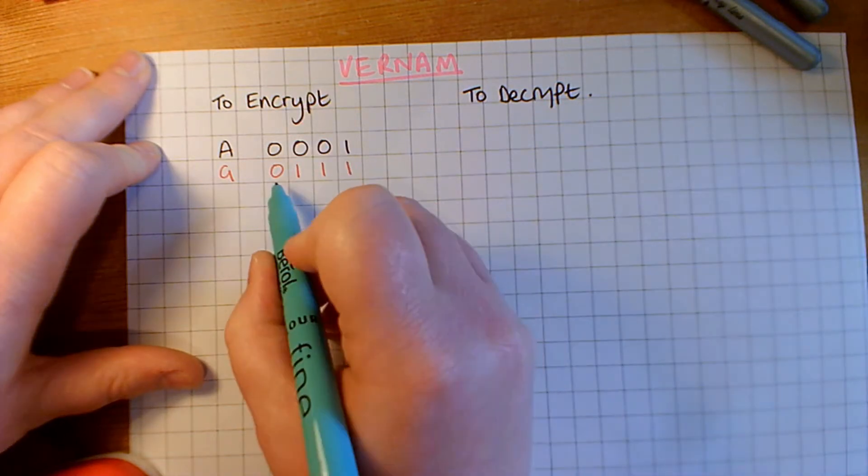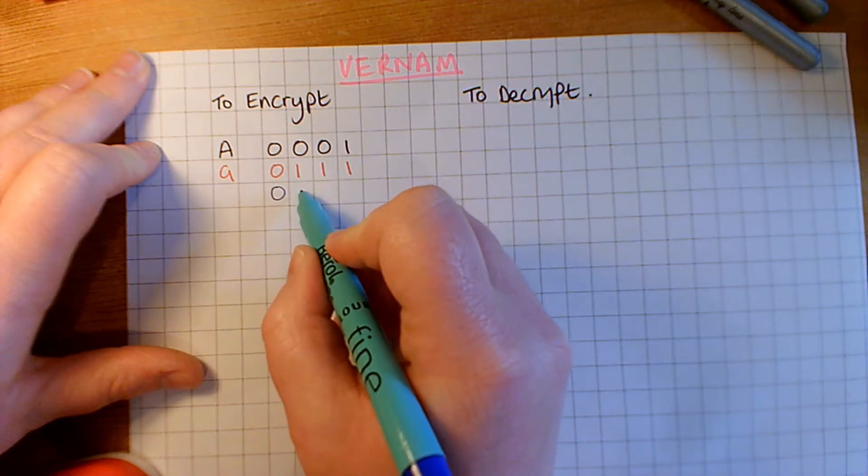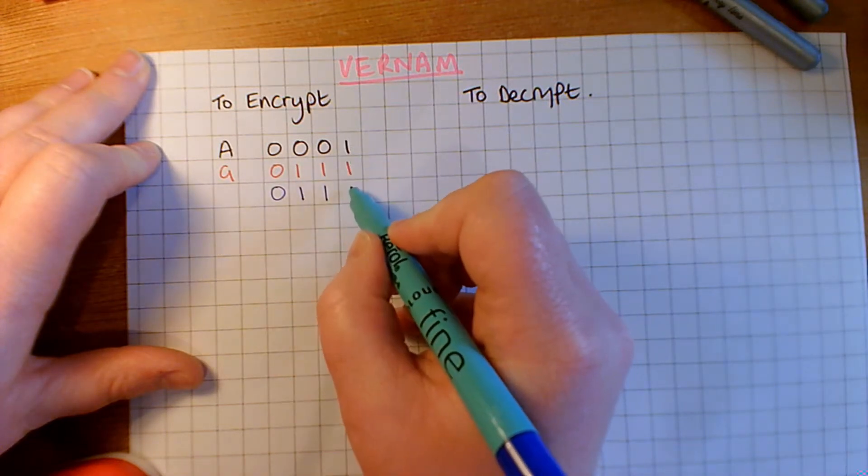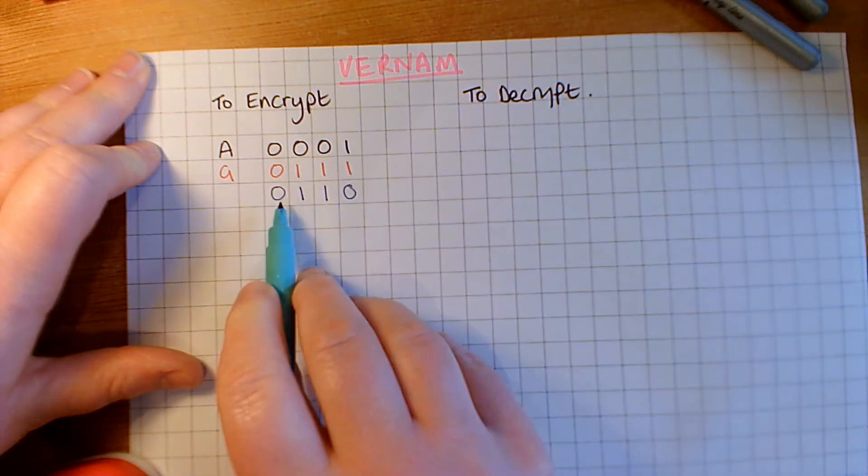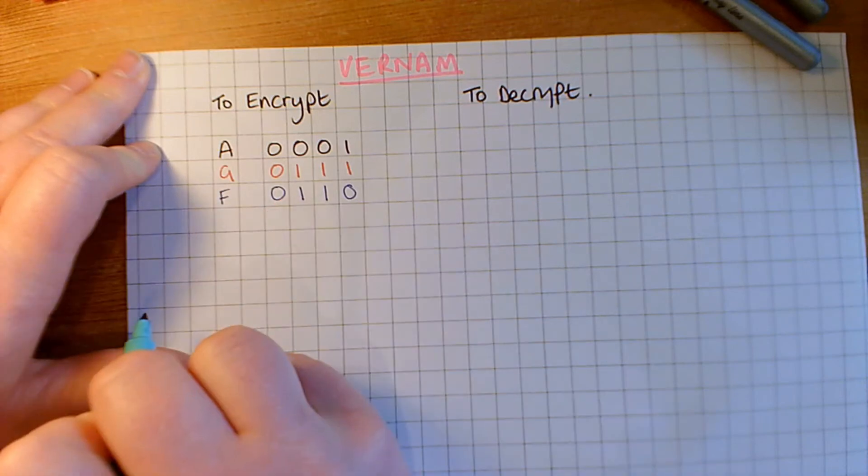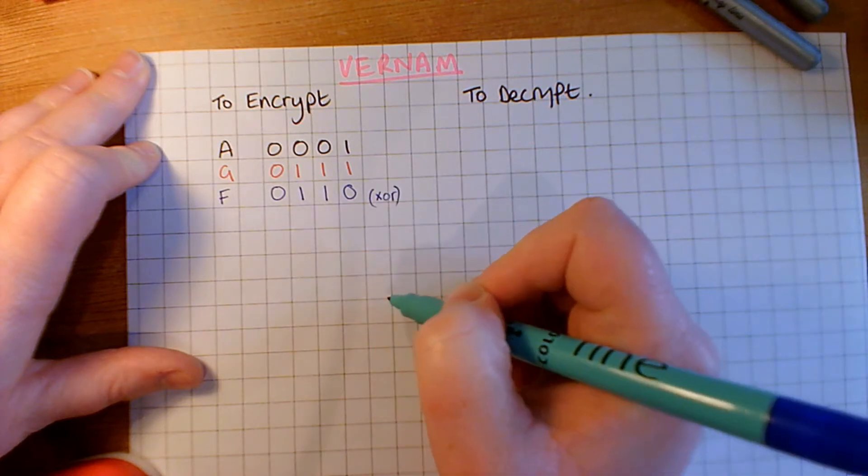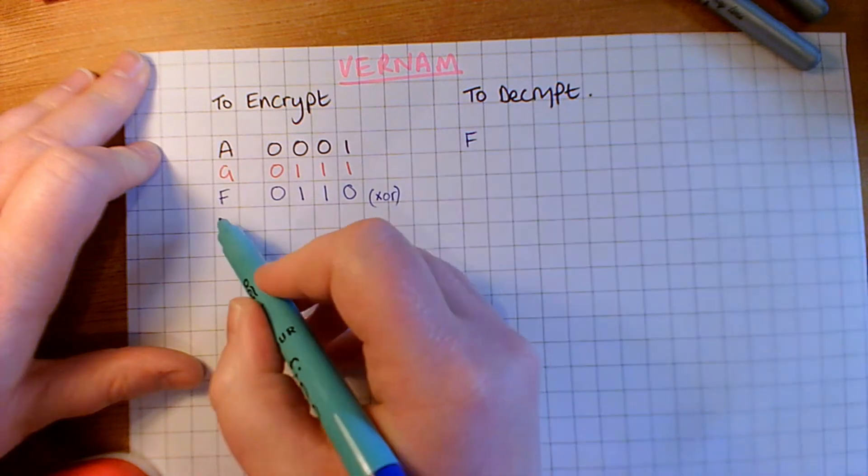So, if we move across here, we have zero and zero. Zero, zero and one is one. Zero and one is one. One and one is zero because it's exclusive OR. So, we've got zero, one, one, zero, which is actually the letter F. Okay, so remember here, that was our XOR. So, the letter F, that is what is sent.